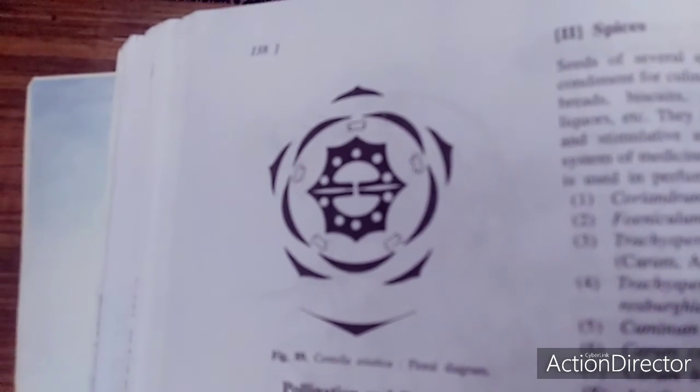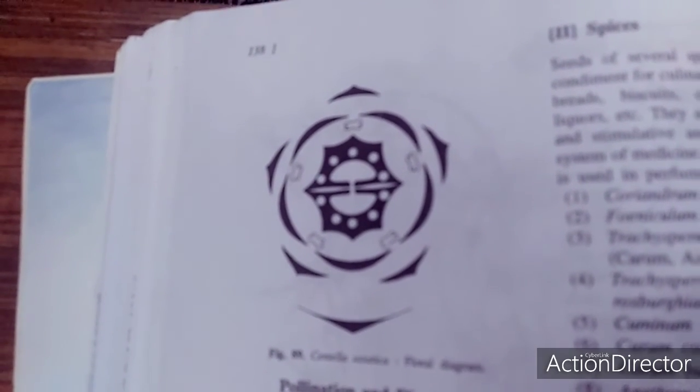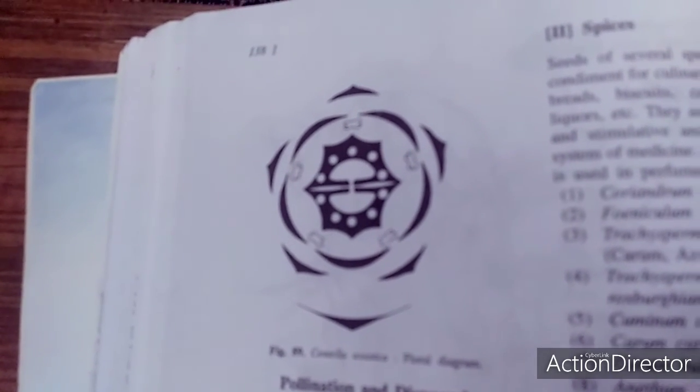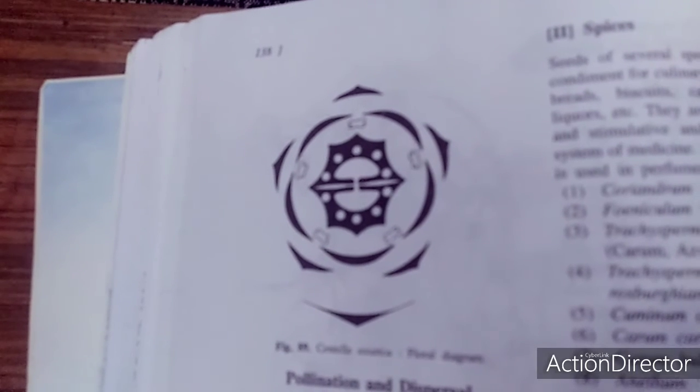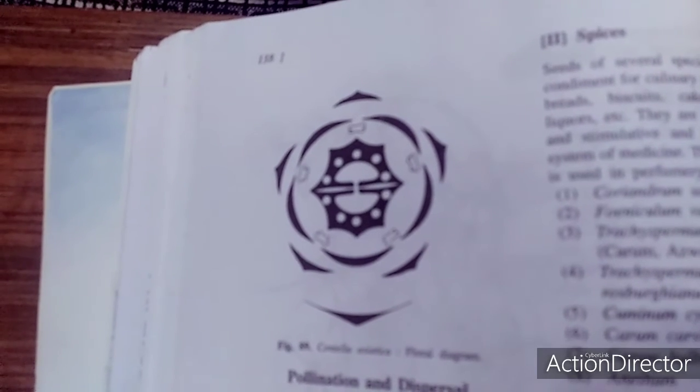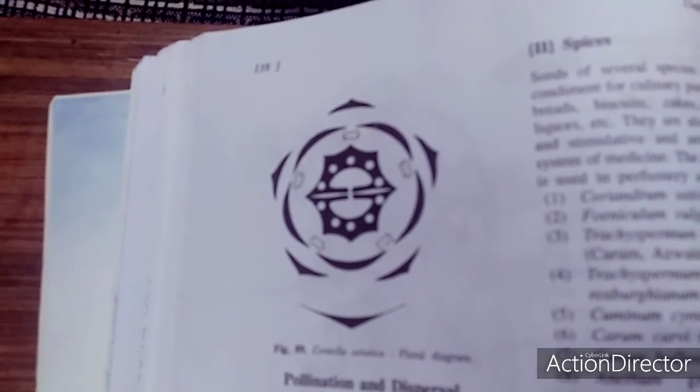The gynoecium is two carpels united. Ovary is inferior, bilocular with one pendulous and anatropous ovule in each locule. Axile placentation is there. Style is two, frequently with a characteristic disc-like enlargement at the base which is called the stylopodium. Stigmas are two, obscure stigma has been recognized.